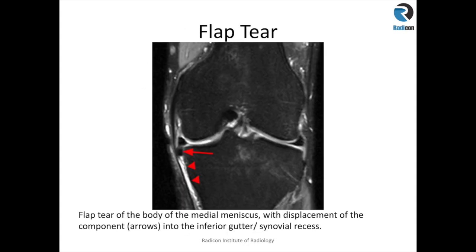Here is an example of a flap tear of the body of the medial meniscus. You can see a rounded low signal intensity structure along the border of the medial tibial condyle, deep to the MCL. The MCL runs down as a black low signal intensity structure, and this displaced fragment — which should not be there — confirms a flap tear of the body of the medial meniscus.